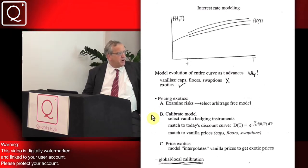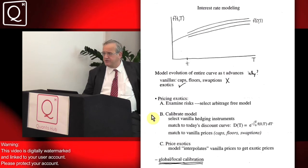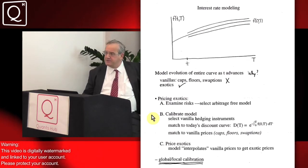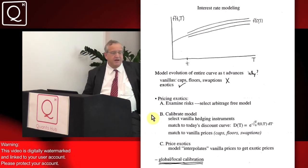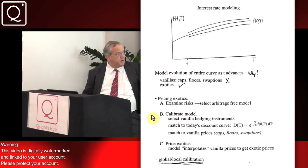Once you select the arbitrage-free model, a model right out of the box is completely useless because it has these things in them called mathematical parameters. Until you set the values of those mathematical parameters, you're not going to be pricing anything. So the next step is a calibration step.